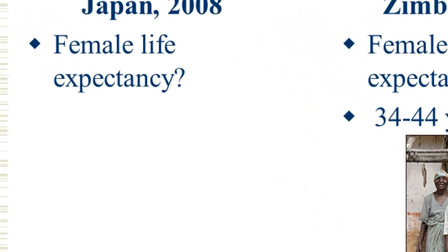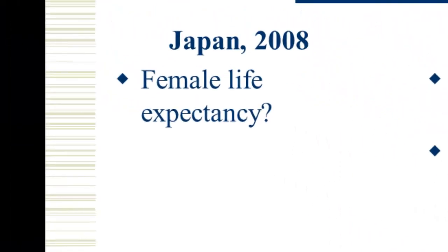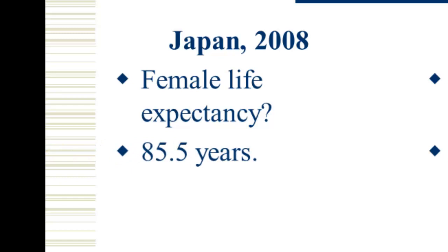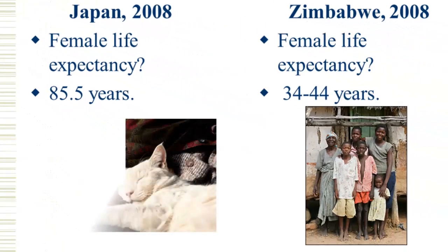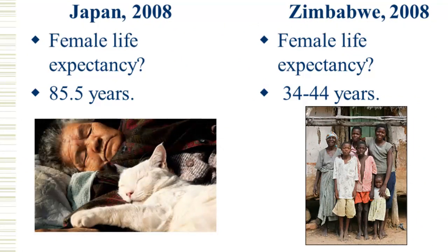Japan had the highest female life expectancy — we use female life expectancy because women generally live longer than men. In Japan, that was 85.5 years in 2008. And here's a photo of a Japanese grandmother with her pet cat resting peacefully.